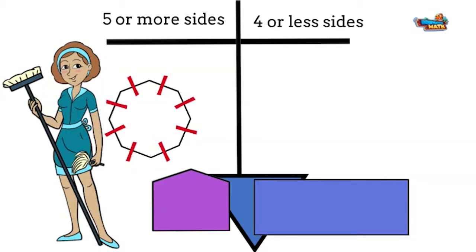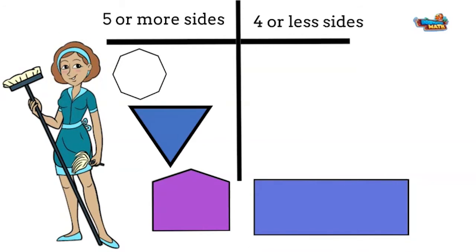The next shape has one, two, three sides. It is a triangle. It has less than five sides. It will go here. This shape is a pentagon.